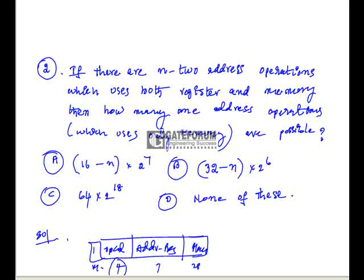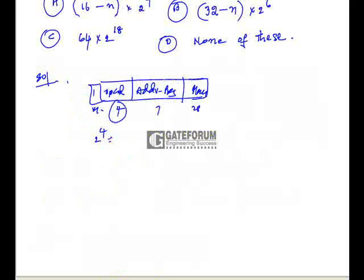We have already seen using 4-bits, 2^4 different operations, 16 different operations. Out of this, N 2-address operations. Out of this, only N are possible.